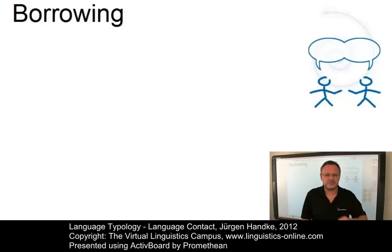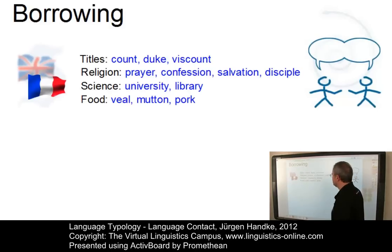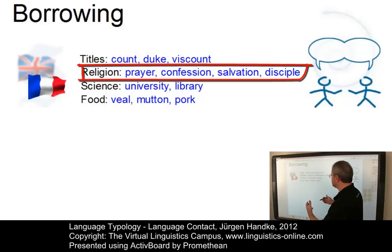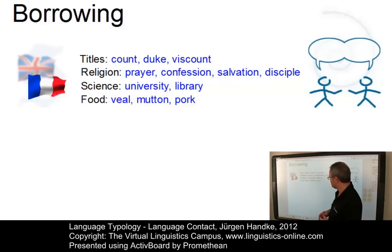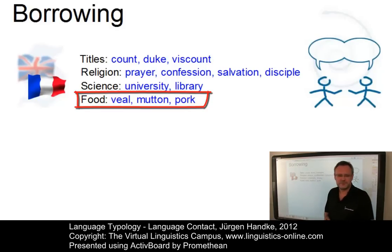English, for example, has borrowed numerous French words, especially after the Norman invasion. Here are some examples. They come from the areas of titles, the area of religion, science, and last but not least, words that belong to the word field of food.